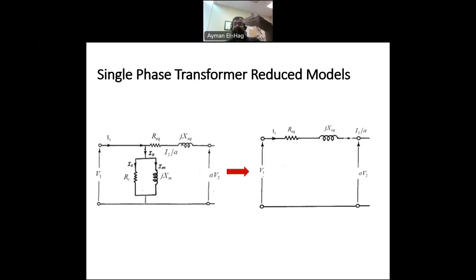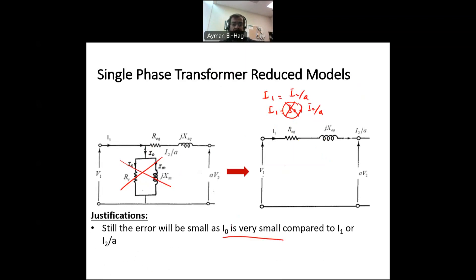Now, we move to the second reduced model. We mentioned that I0 is extremely small compared to I1 and I2 over A. So what if I just completely remove it? And then I will have just R equivalent and X equivalent without having this branch because the contribution of this branch is extremely small that it will not affect. Now, here in this model, I1 will be equal to I2 over A. In the previous model, I1 is equal to I0 plus I2 over A. But I0, as I said, is very, very small. So I can ignore it and I have this model. And that is the justification for that model, that because I0 is very, very small compared to I1 or I2 over A.